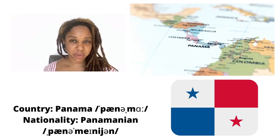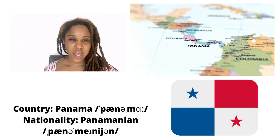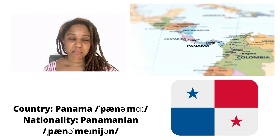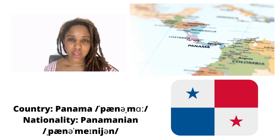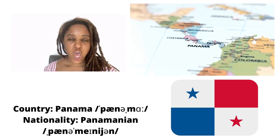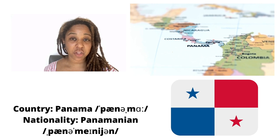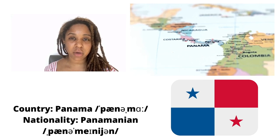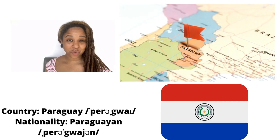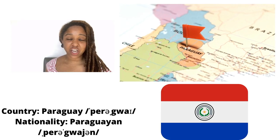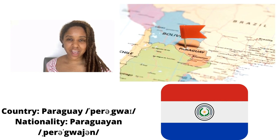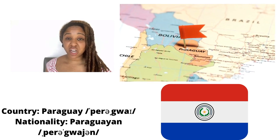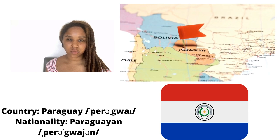Now we have the Central American country of Panama. People from Panama are called Panamanian. Notice the difference in the pronunciation of the third syllable in Panama and Panamanian. And now we're going to look at the South American country of Paraguay. People from Paraguay are called Paraguayan.